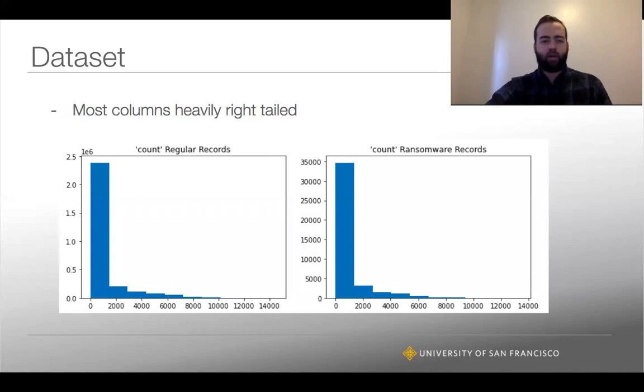The actual data itself - a lot of the columns are quantitative columns, including count, which is a daily count of the number of transactions on that wallet. They're heavily right-tailed, which adds some noise. It's not really distinguishable between the ransomware and normal. There's certainly a lot of noise in this data.